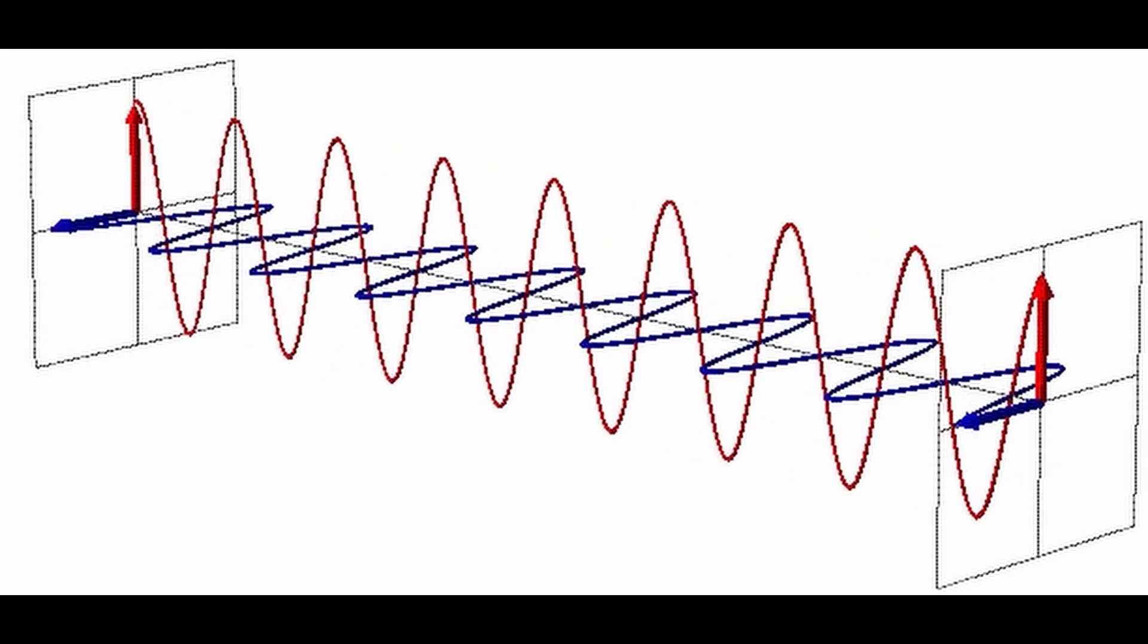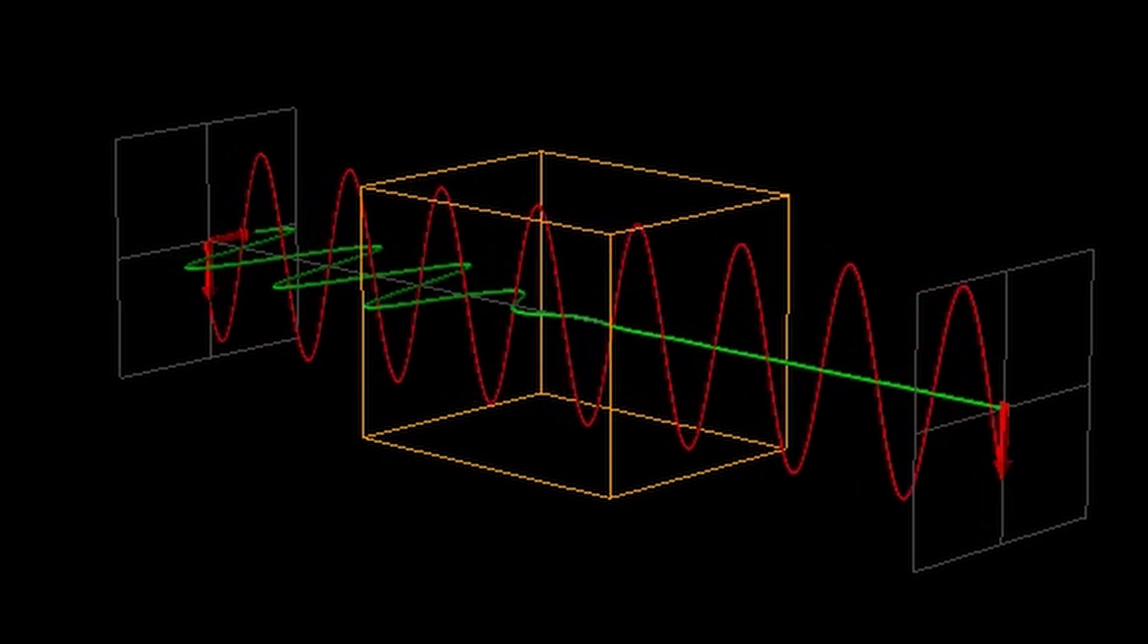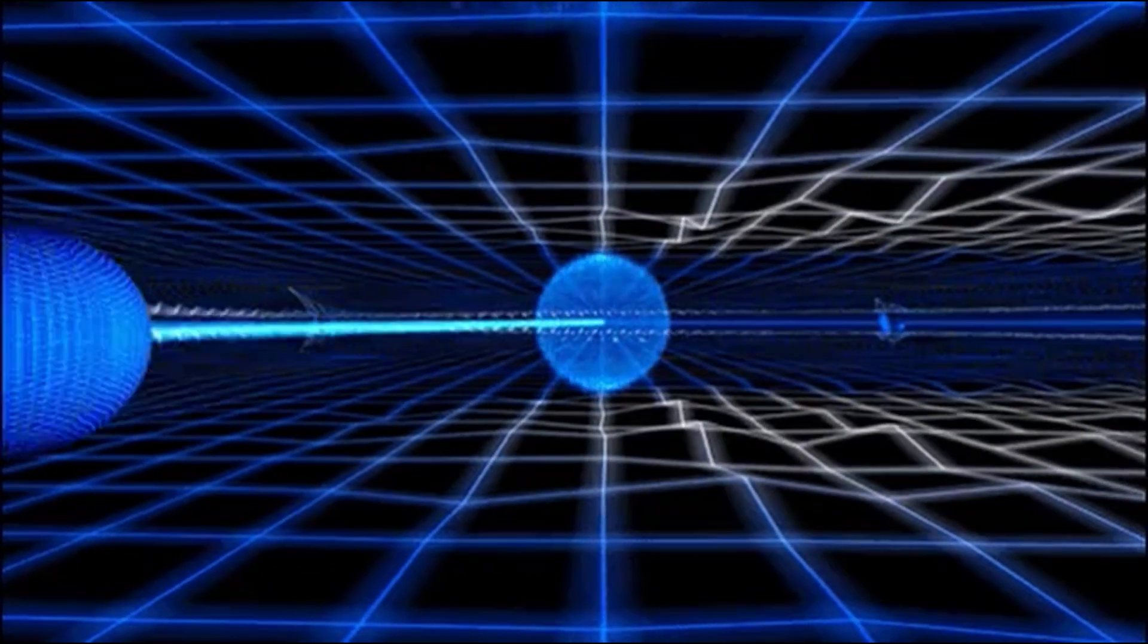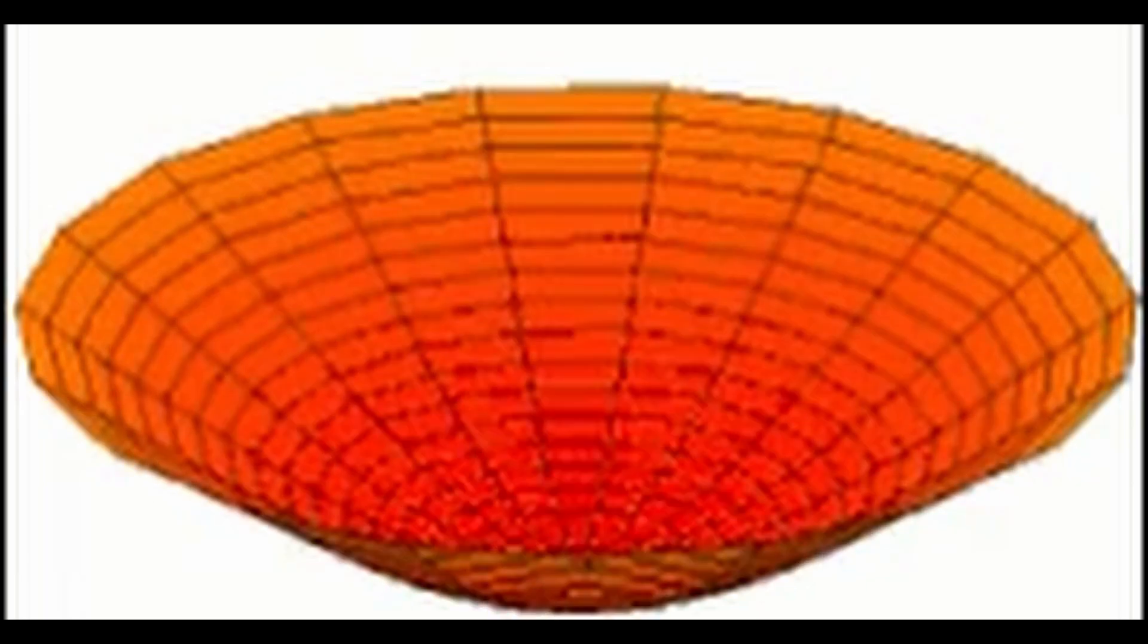In summary, π is woven into the fabric of physics, appearing in a wide range of formulas that describe the natural world. Its presence in these equations is not just a mathematical coincidence but a reflection of the circular and periodic nature of many physical systems.